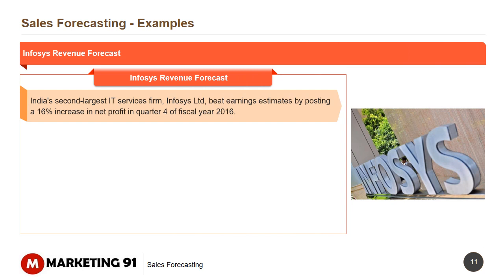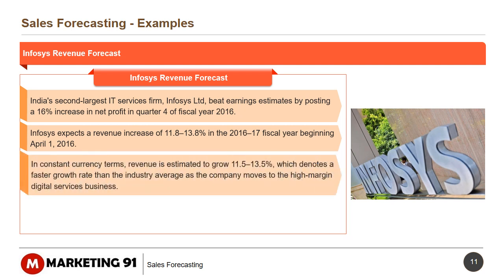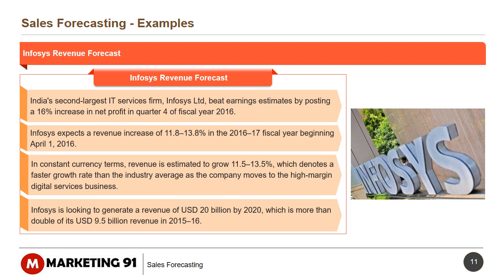Another example is Infosys Revenue Forecast. India's second-largest IT services company, Infosys Limited, beat earnings estimates by posting a 16% increase in net profit in Q4 of fiscal year 2015-16. Infosys expects a revenue increase of 11.8% to 13.8% in the 2016-17 fiscal year beginning April 1, 2016. In constant currency terms, revenue is estimated to grow 11.5% to 13.5%, as the company moves to high-margin digital services businesses. Infosys is looking to generate a revenue of US$20 billion by 2020, more than double its US$9.5 billion revenue in 2015-16.